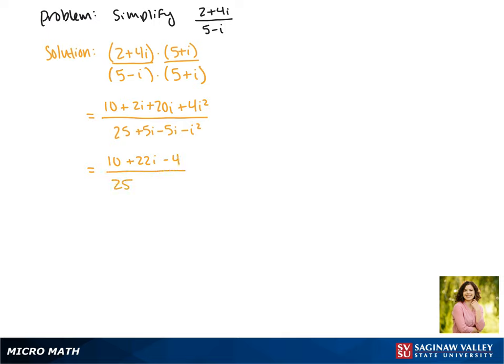In the denominator we have 25, then positive 5i and negative 5i cancel out, and again this i squared is negative 1 which makes this a plus 1. So we no longer have i's in the denominator.